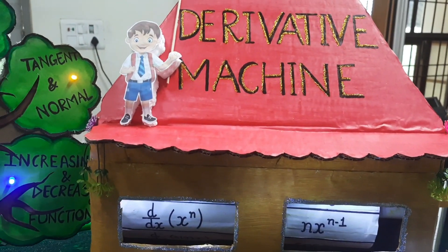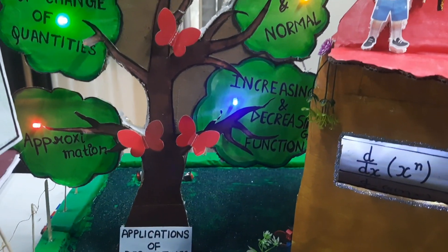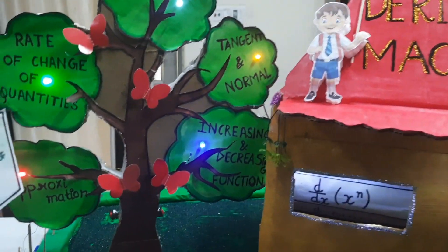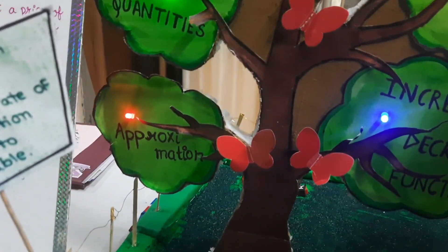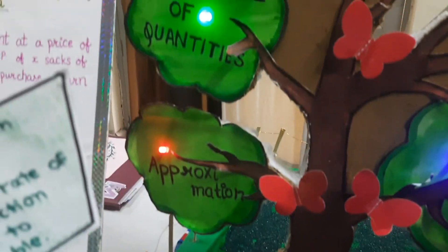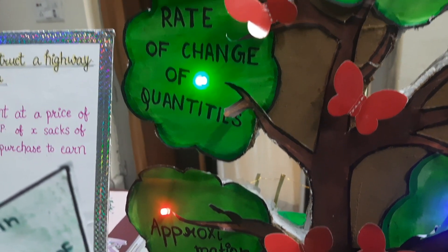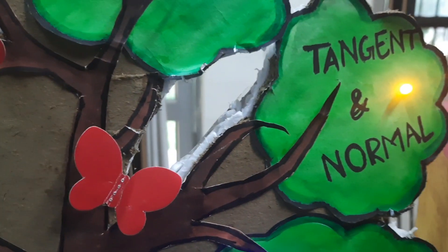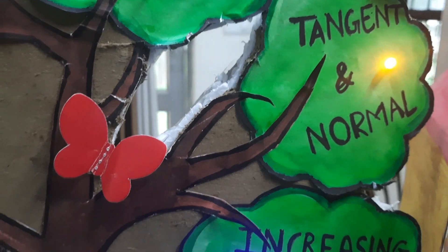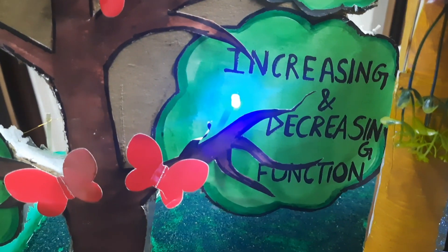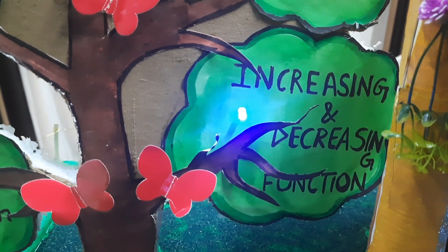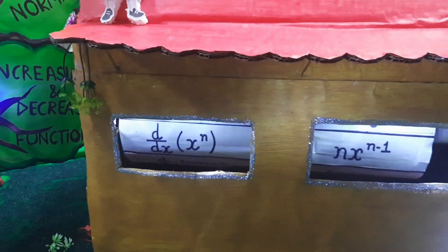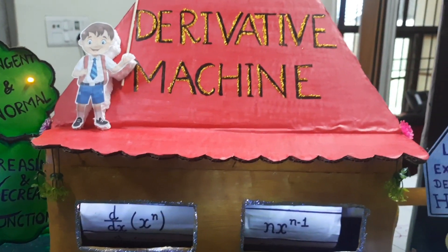After this derivative machine, I have made this application of derivative. The application of derivative shows where derivatives are used. Derivatives are used for finding the approximation value. Second, the rate of change of quantities can be found using derivatives. We can find maxima and minima. Tangent and normal can also be found using derivatives, as well as the intervals of increasing and decreasing functions.